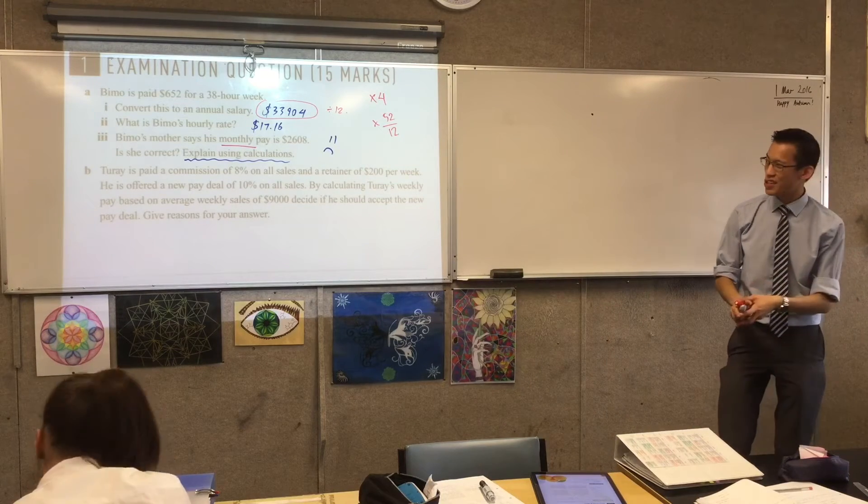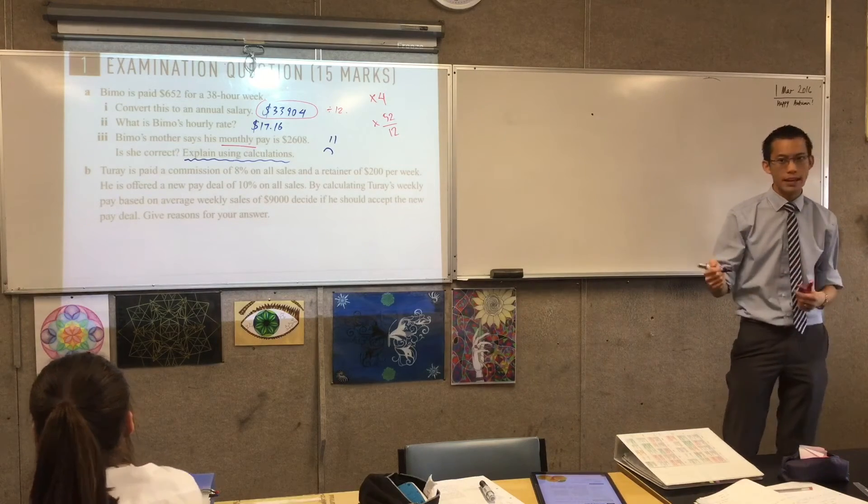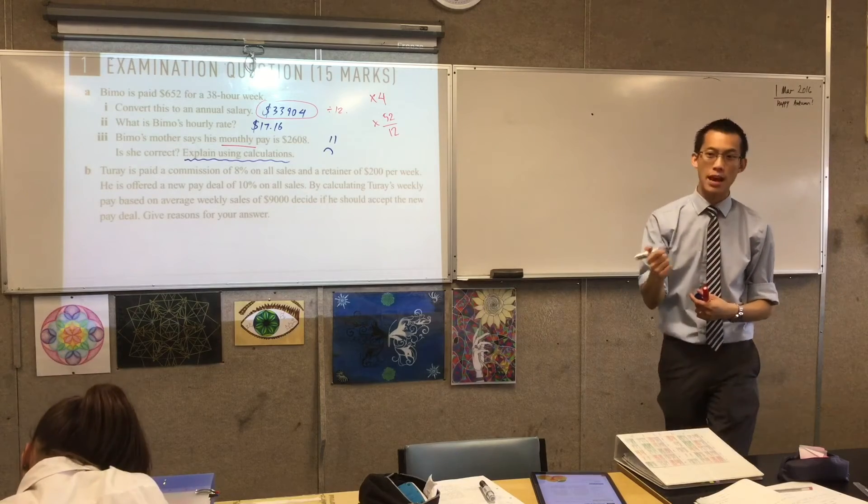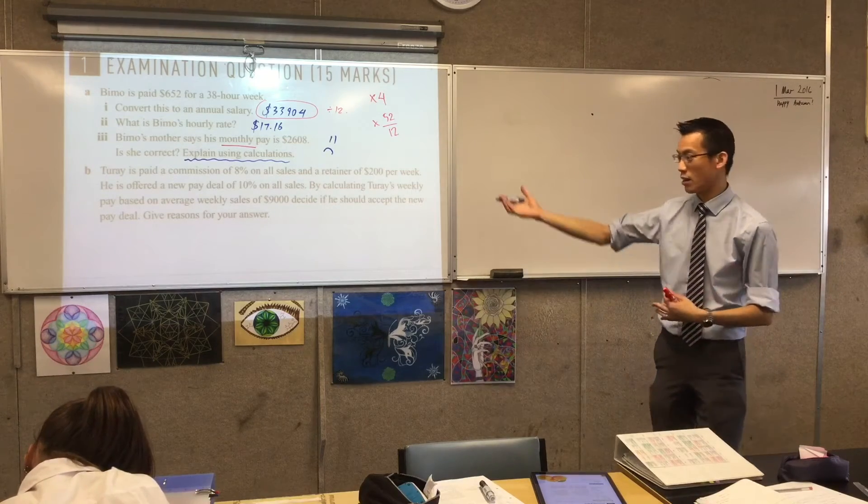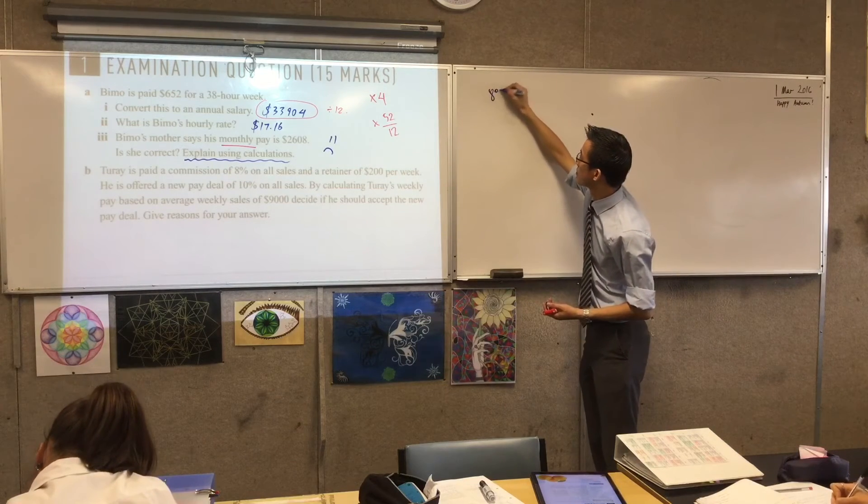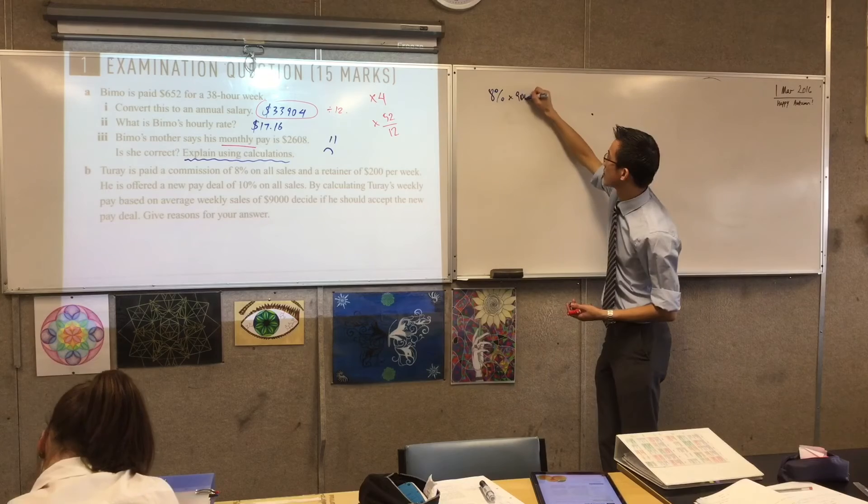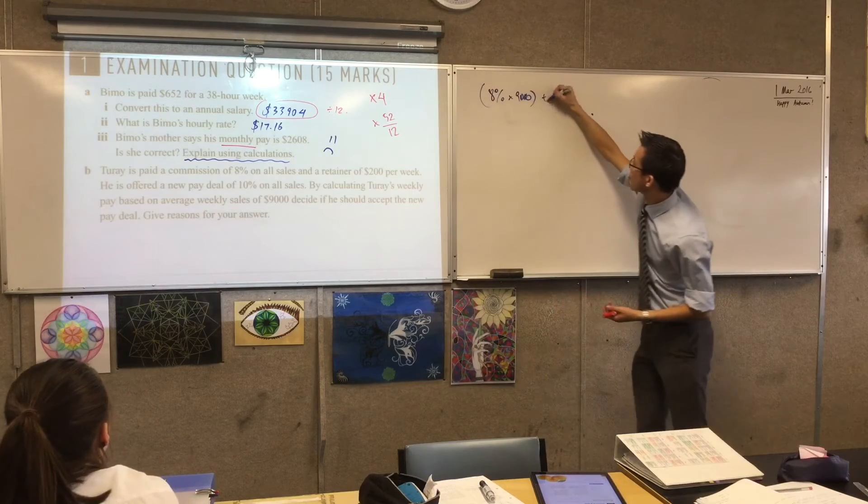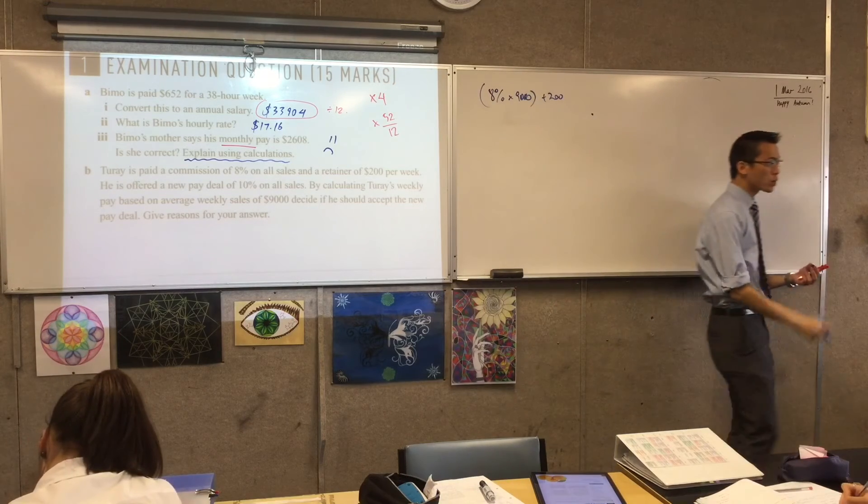Okay, now, for part B, this time, rather than just get to the answers, I'd love some working. So, what would someone suggest as their first line? What do they actually put down to argue for one or the other? Okay. I put in brackets 8% times 9,000, and then out of brackets plus 200. Okay, so, let's just pause for a minute.